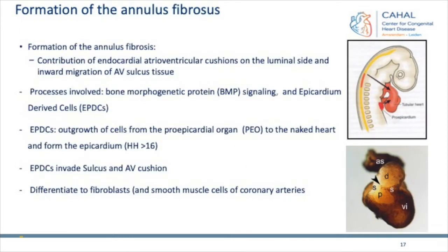The formation of the annulus fibrosis is of course important. You need a mature conduction system but also annulus fibrosis formation. The contribution is from endocardial AV cushions on the luminal side and inward migration of the sulcus on the outside. BMP signaling and epicardial-derived cells from the pro-epicardial organ play a role in isolation of the AV ring. EPDCs spread out over the naked heart, become epicardial cells, grow into the sulcus, and differentiate to fibroblasts, also contributing to smooth muscle cells of coronary arteries.